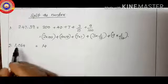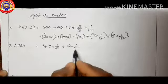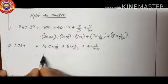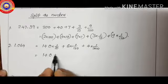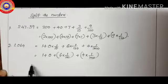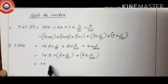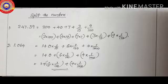Second question: 1.064, which equals 1 plus 0 into one-by-ten plus 6 into one-by-hundred plus 4 into one-by-thousand, which simplifies to 1 plus 6 into one-by-hundred plus 4 into one-by-thousand.